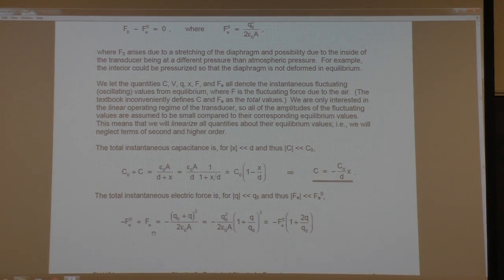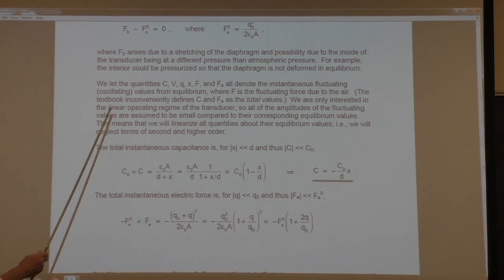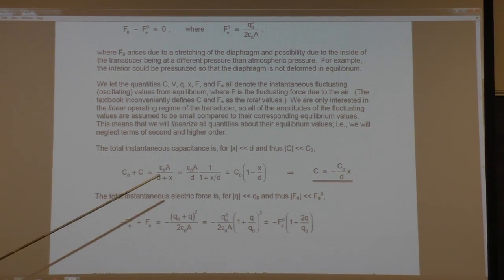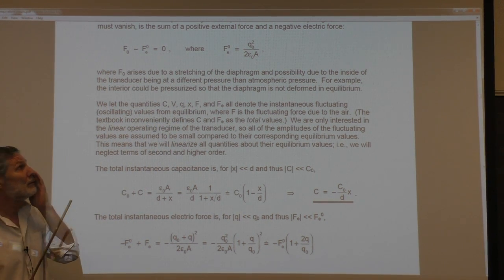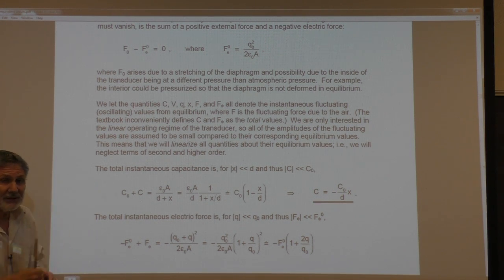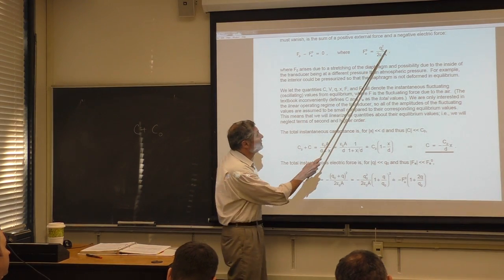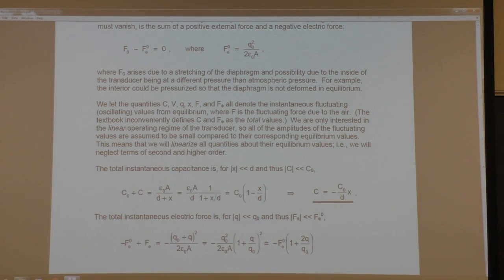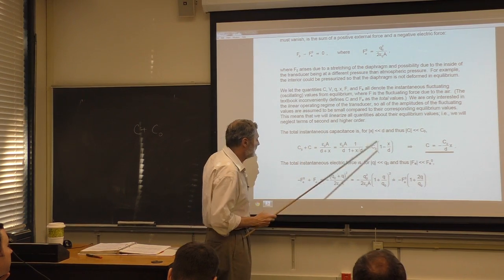We do the same thing with the electric force. The force on a capacitor plate for a parallel plate capacitor is the electric field times the charge — F = Q²/(2ε₀A). For the instantaneous value, we replace the equilibrium charge with Q₀ + q. Again it's nonlinear, so we expand: (1 + q/Q₀)² ≈ 1 + 2q/Q₀.